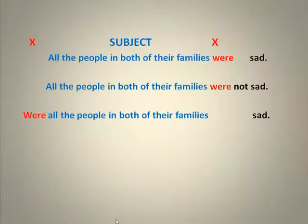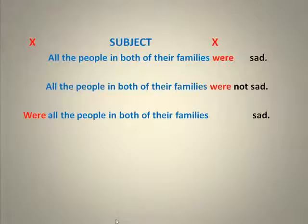The subject in the next example is pretty long, but we can find it the same way. We know that 'were' is an X word because when I move it to the front, I make a yes or no question. And we see that when we see the X word in these two different positions, the space between that place in the sentence is where the subject goes.